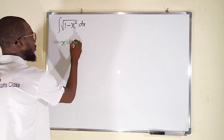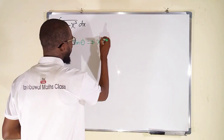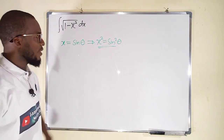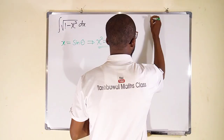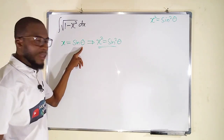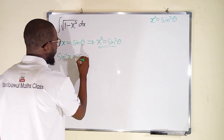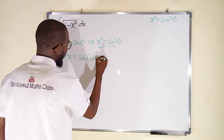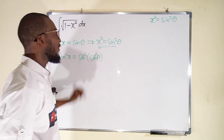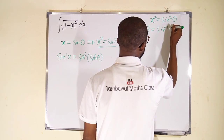Let x be equal to sine of an angle theta. This implies that if you square both sides you have x squared equal to sine squared theta. Therefore we need this x squared equal to sine squared theta. From here, if we are looking for theta we can take sine inverse of both sides. Sine inverse of x will be equal to sine inverse of sine theta, and this sine inverse will cancel sine leaving only theta. This means that theta is equal to sine inverse of x.